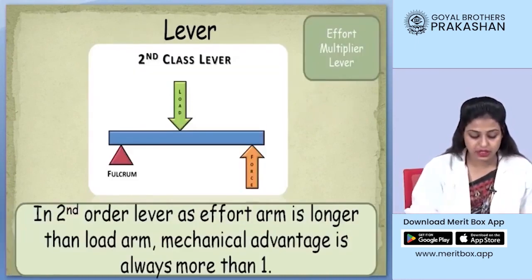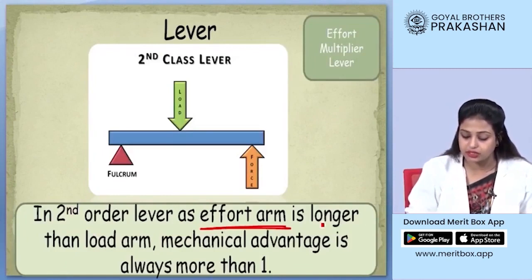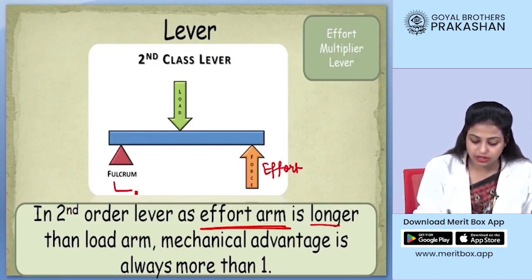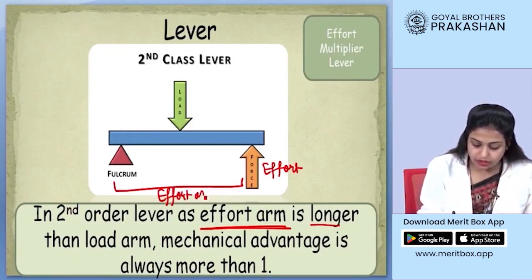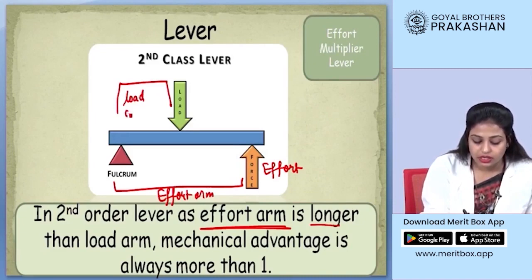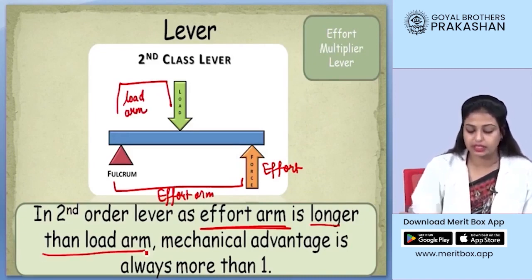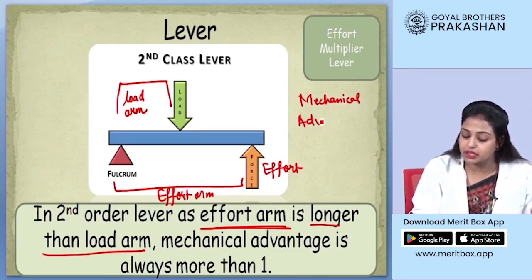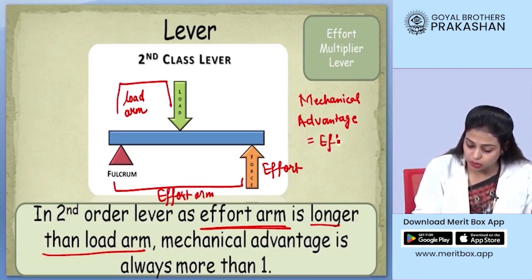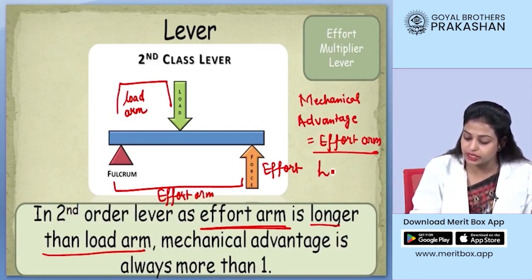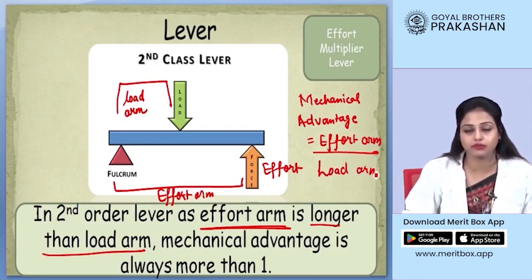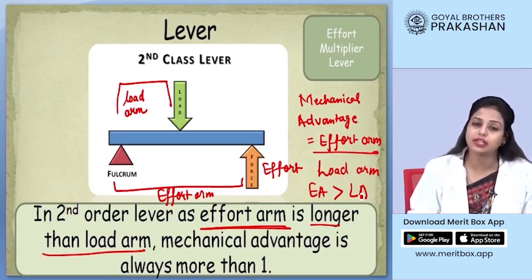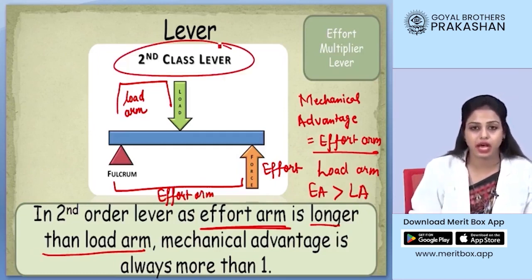Let's understand how this works. In second order lever, the effort arm is longer. The effort arm is where the force is being applied, and the load arm is the distance from the fulcrum to the load. Since the effort arm is always greater than the load arm, and mechanical advantage equals effort arm upon load arm, the mechanical advantage will always be greater than 1 in the case of a second class lever.